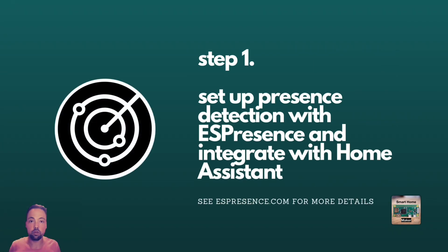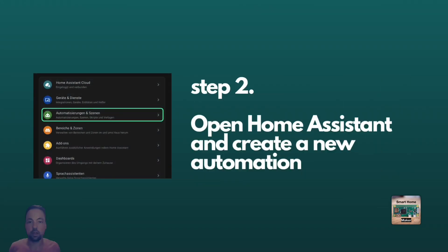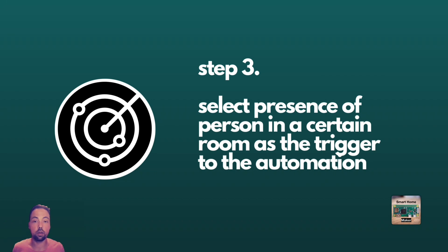The first step is to set up presence detection with ESPresence. You can find more details on how to do this on ESPresence.com. Afterwards, you also have to integrate ESPresence with Home Assistant — there are already numerous tutorials out there, so I don't want to explain this in detail here. The second step is to open Home Assistant, go to Settings, Automations, and create a new automation. The third step is to use the location determined by ESPresence for a person as a trigger for this automation.